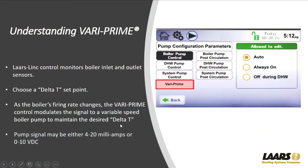Next we'll talk about Vari Prime. The Laars controls monitor the inlet sensor and outlet sensor of the boiler — we're looking at a delta T. You choose the delta T, for example a 20-degree or 30-degree delta T. We can have a variable speed pump for the boiler pump, and as the firing rate changes and we're modulating, we look at our delta T and send a signal to the variable speed pump to maintain whatever desired delta T you choose.